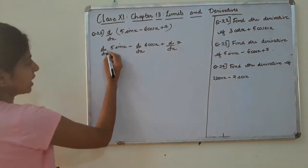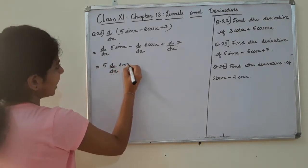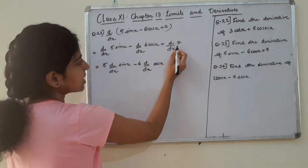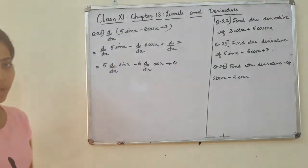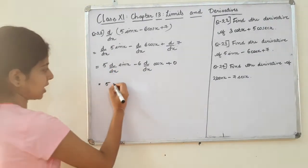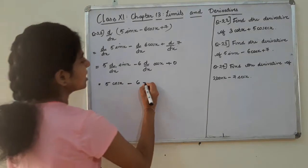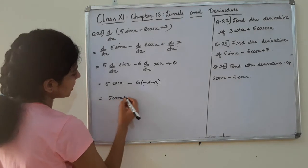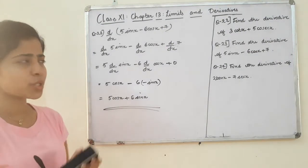The derivative works out to 5 cos x minus 6 times negative sin x, giving us 5 cos x plus 6 sin x. This is the final answer.